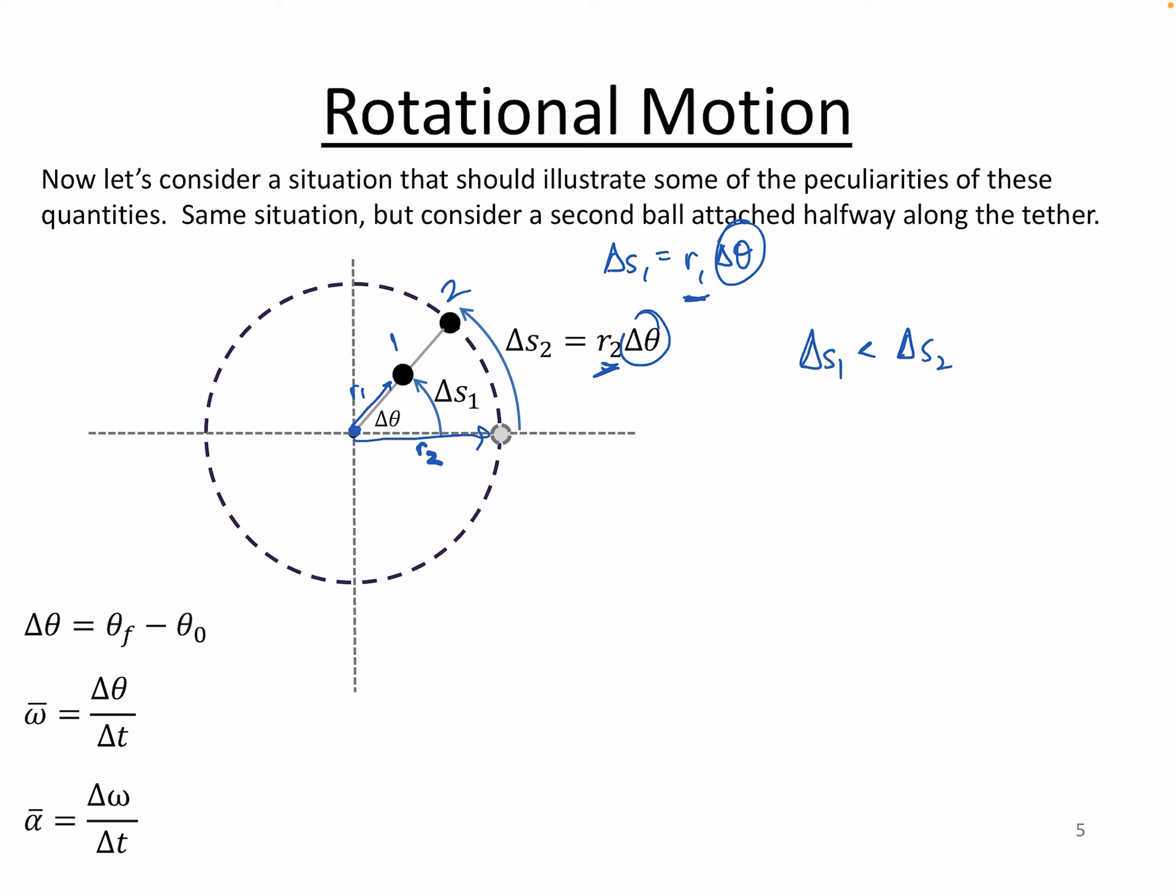So that's a particular difference between angular quantities and linear quantities when you're talking about objects moving in a circle. The linear quantities can vary significantly depending on whether you're talking about ball number one, ball number two, or any little bit of mass that's part of a rotating object.